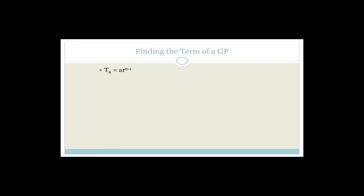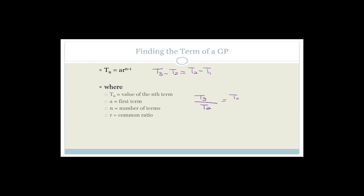Now let's look at geometric sequences — most of you know them as GPs. The formula for finding the Nth term is Tn equals A times R to the (N minus 1), where A is the first term, N is the number of terms, and R is the common ratio. With arithmetic sequences we had a common difference — T3 minus T2 equals T2 minus T1. With GPs there's a common ratio: T3 divided by T2 must equal T2 divided by T1.